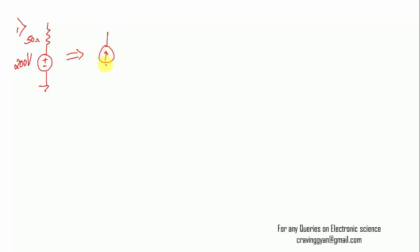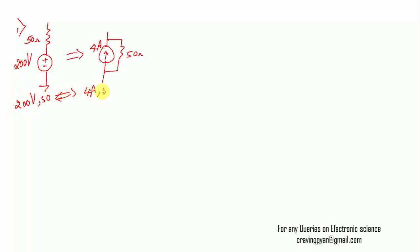Let's take a simple problem. Given a practical voltage source of 200 V with a resistor of 50 Ω, we need to convert it into a practical current source. The equivalent current source has the same resistance of 50 Ω, and the current value is 200 divided by 50, which equals 4 amperes. So 200 V, 50 Ω converts to 4 A, 50 Ω.